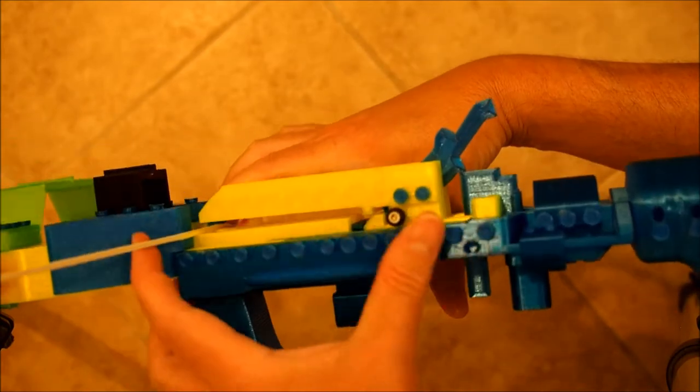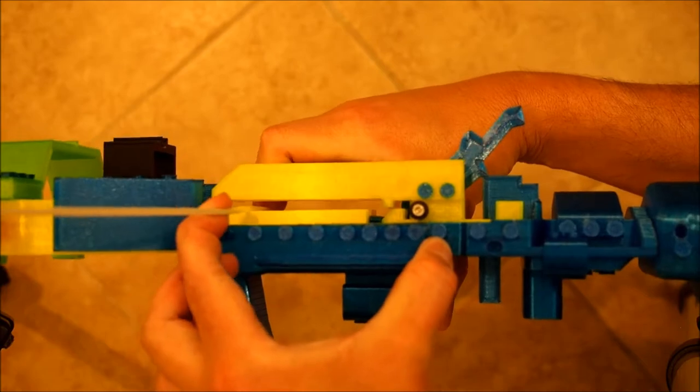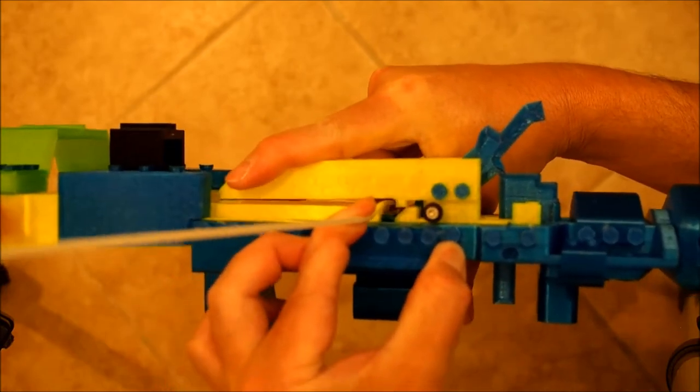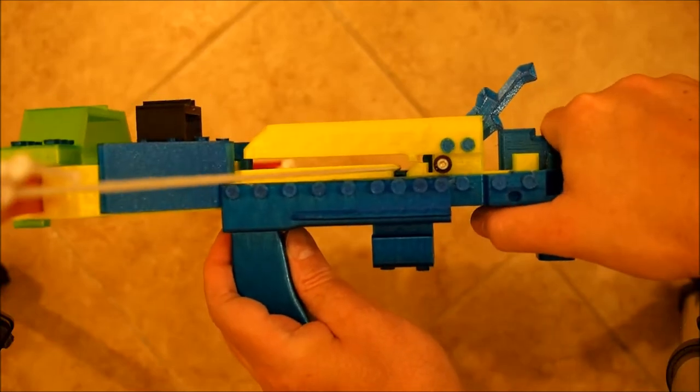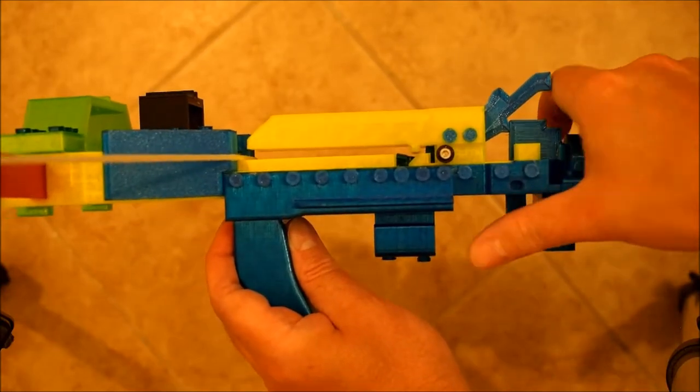Again, the string is pulled back like this and falls into that pit. And then pulling the trigger sends it back up onto the rail and it goes forward.